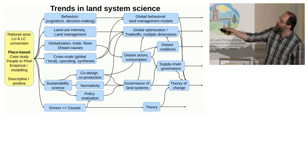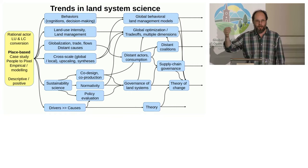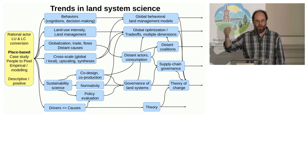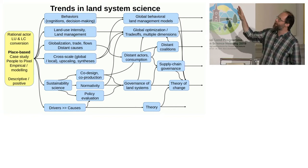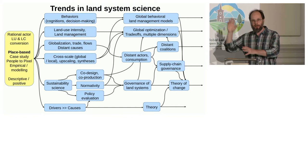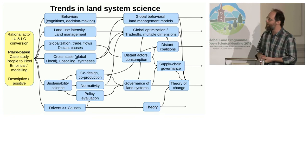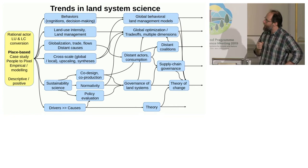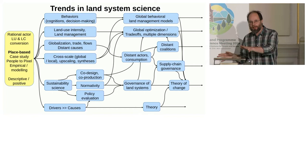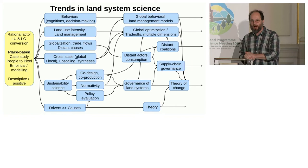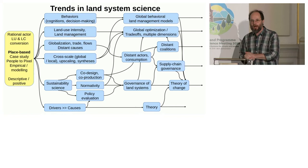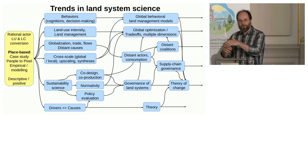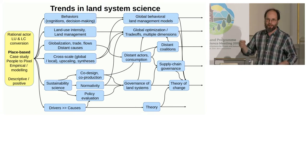From this initial core of people-to-pixels, land system science has developed in many different directions over recent years. This is a very tentative graph I made partly based on my own mapping of the field and partly by going through the program of this conference and looking at different themes. It's just to represent that from this initial core, land system science has expanded in many directions, sometimes drifting a little apart from the core, with a lot of interactions with neighboring fields such as earth system science and political ecology, which then feed back into land system science.